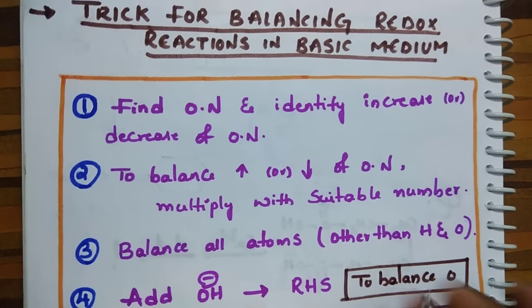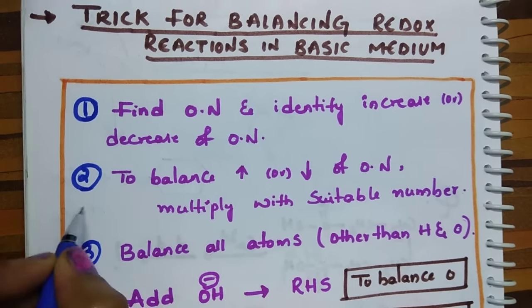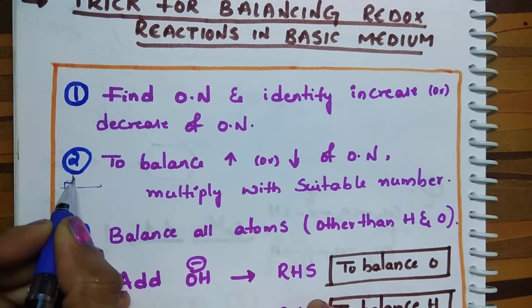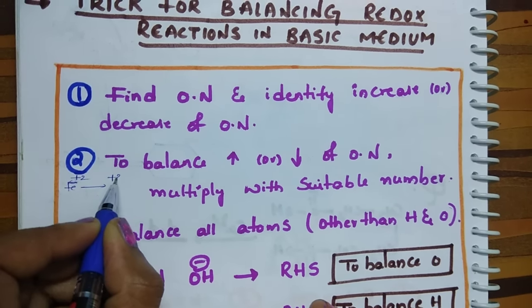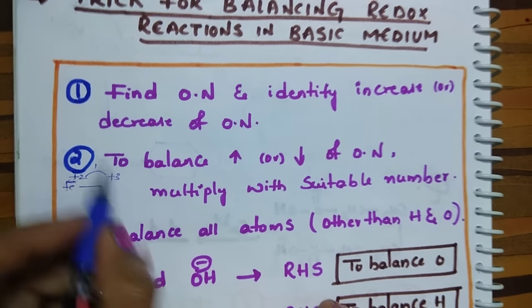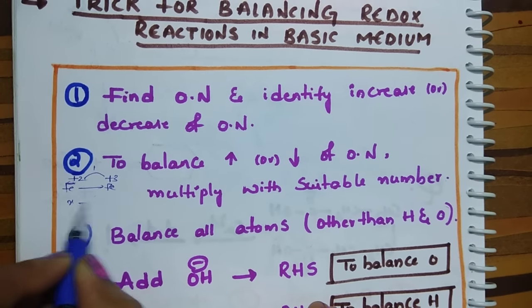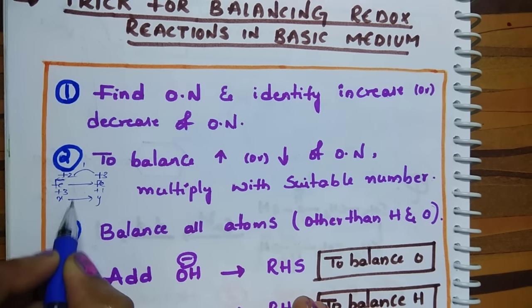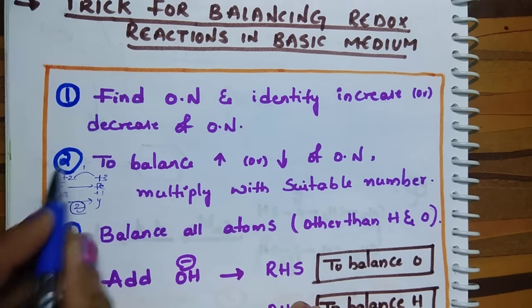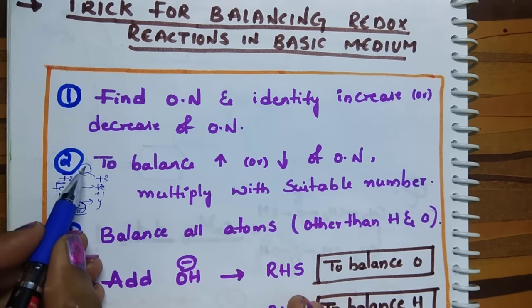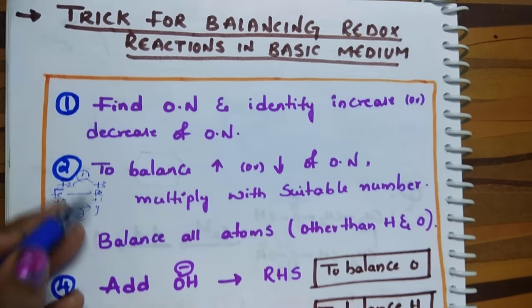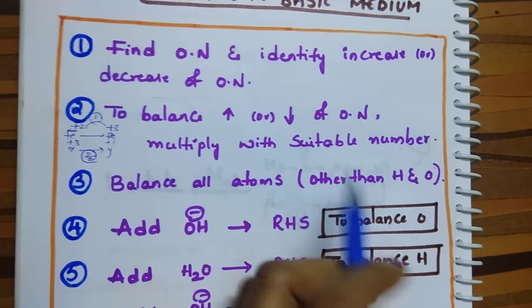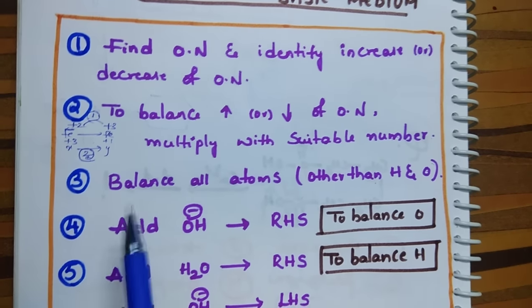Step number two: after finding the increase or decrease in oxidation number, to balance it, multiply with a suitable number. For example, suppose Fe is there and its oxidation number increases from two to three — the change is one. Another species X changes to Y, and its oxidation number changes from three to one — the change is two. So multiply the first equation by two and the second by one so both changes become equal.